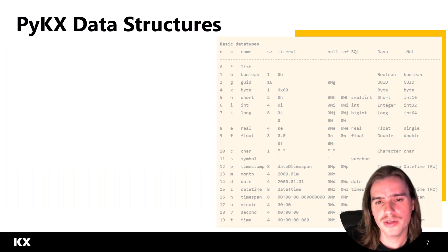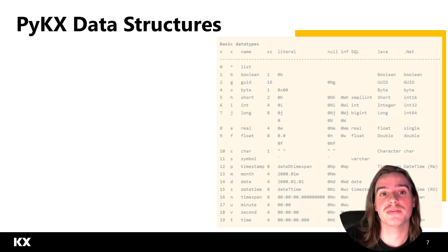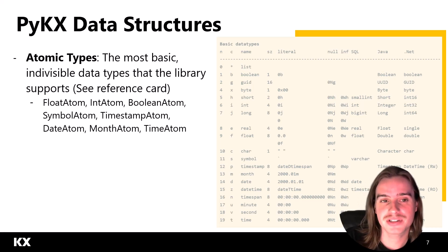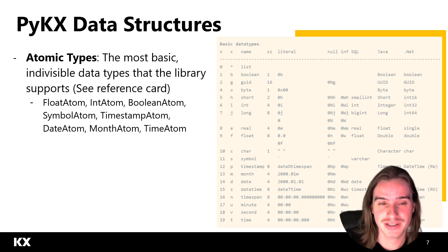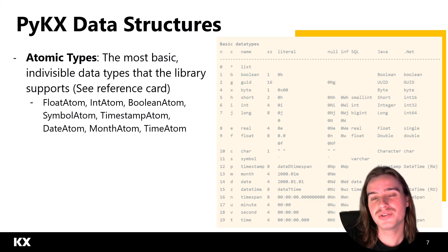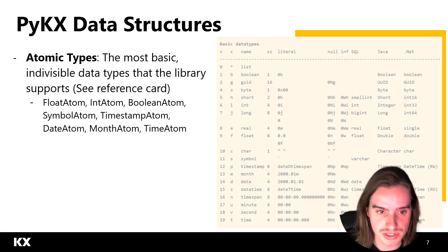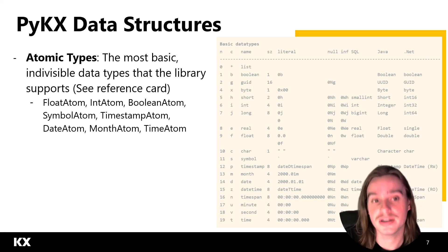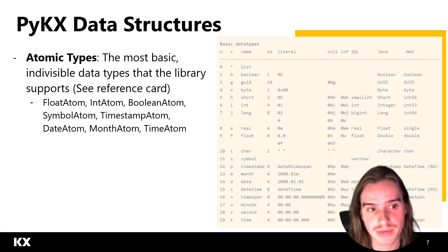The basic data structures available to us in PyKx all start at the core atomic type. The atomic type is PyKx's most basic and indivisible type within the entire library. You can think about floats, integers, booleans, timestamps — all of these data types are atomic types in PyKx.